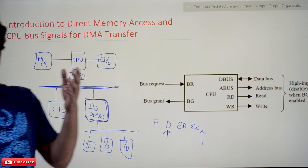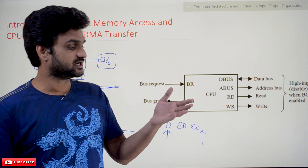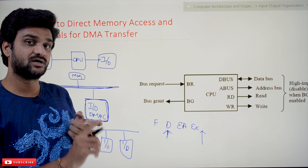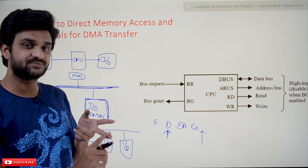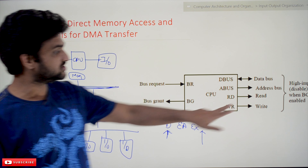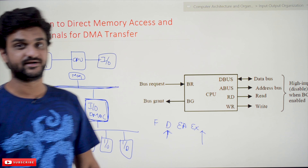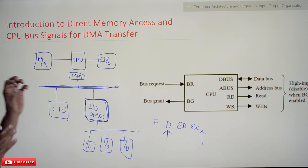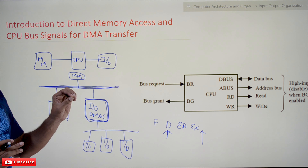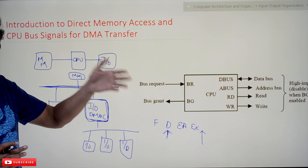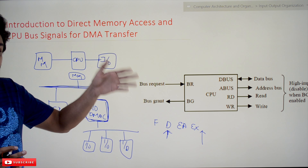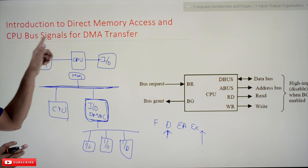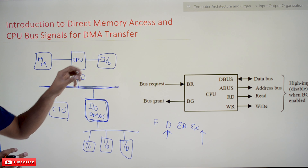So this is what we call direct memory access — even if it is in the middle of execution of an instruction, the CPU stops and the DMA controller is provided access to the bus. The bus consists of three different lines: data bus, address bus, and control lines. In the control lines, we have read and write.